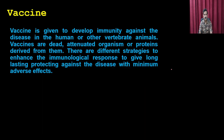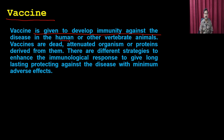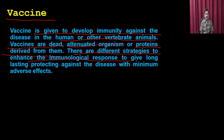Now let us move on to the next topic: vaccines. Vaccines are given to develop immunity against a disease in humans or other vertebrate animals. Vaccines can be dead organisms, attenuated organisms, or proteins derived from them. There are different strategies to enhance immunological response and give long-lasting protection with minimum side effects.